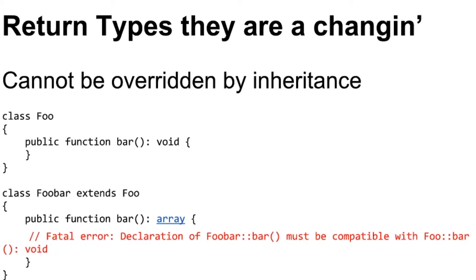Of course, void return types cannot be overridden by inheritance. I've got a class foo with function bar returning void. If I have foo bar extending foo and public function bar now returns an array, that's not valid. That's just the same rules we currently have in 7.0 — you can't change return types through inheritance. Even with void specified, it behaves just like the rest of them: you can't override it through inheritance.